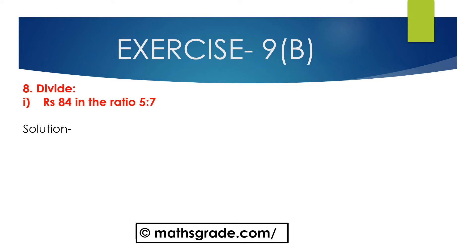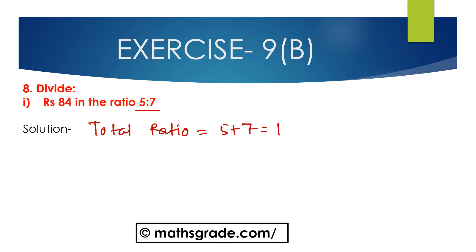Now we will solve question number 1: Divide 84 rupees in the ratio of 5 is to 7. The total ratio is 5 plus 7, which is equal to 12.